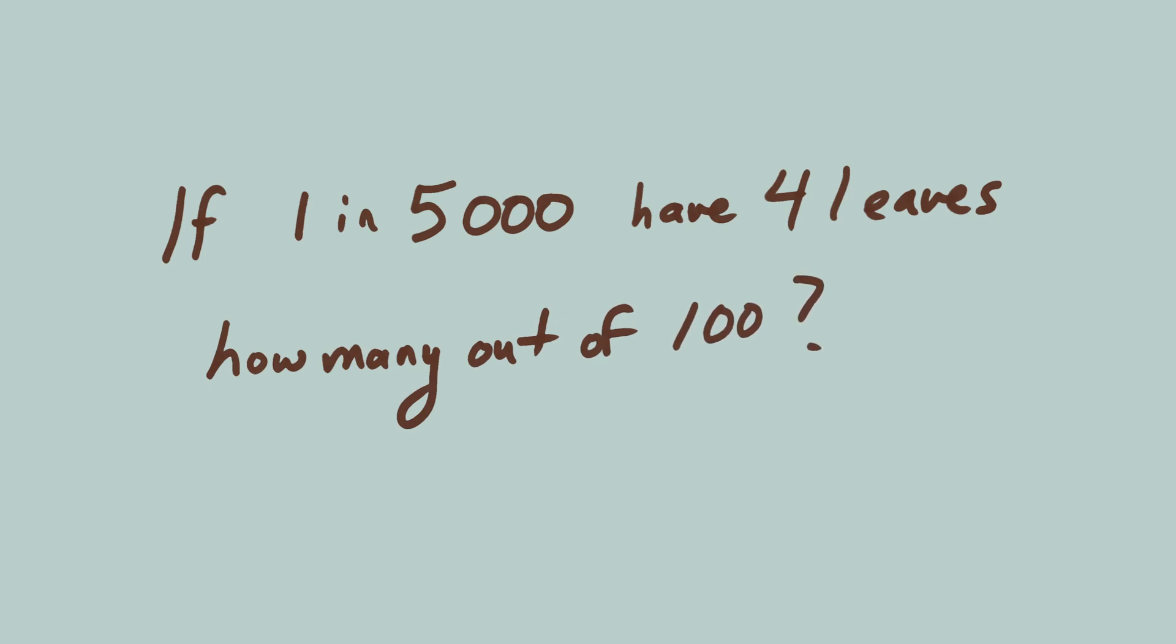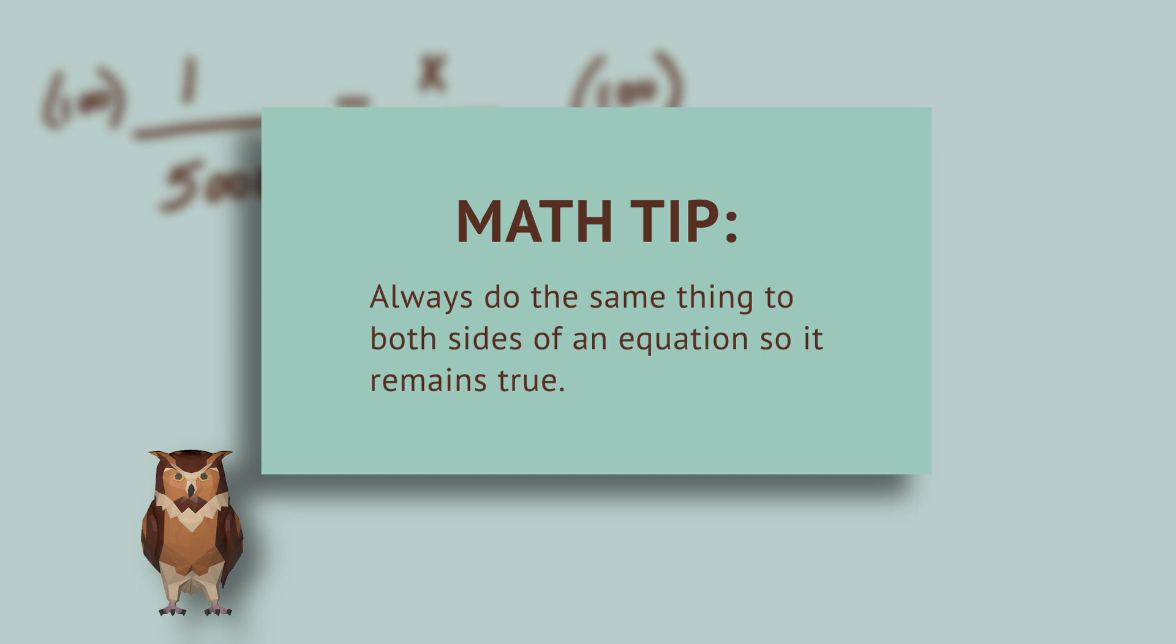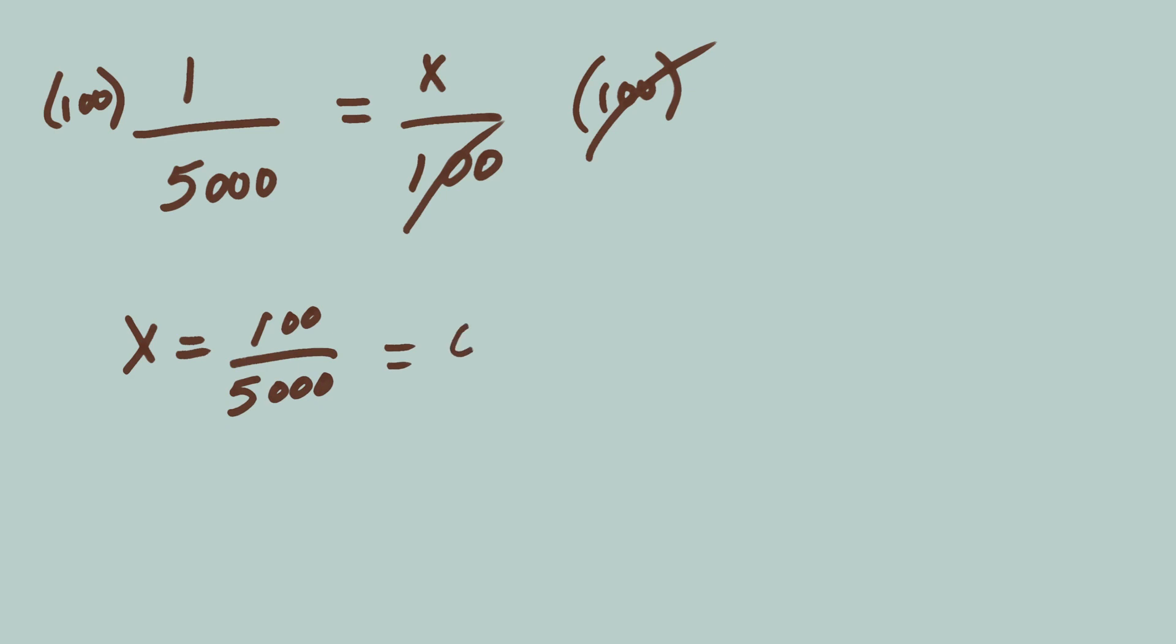You set that up like this: 1 over 5,000 equals x over 100. Now solve for x, the percentage of four-leaf clovers. To get x on its own, multiply both sides of the equation by 100. x equals 100 over 5,000 equals 0.02%.